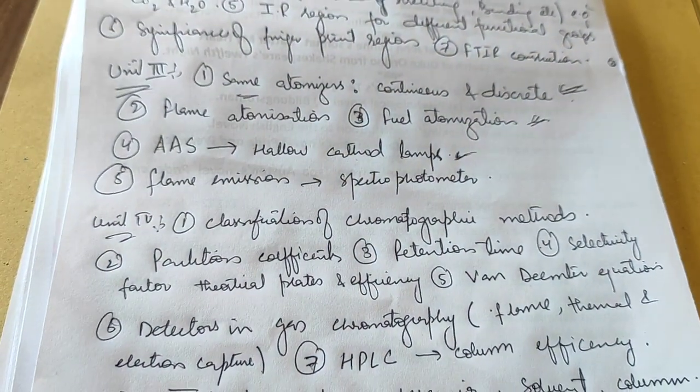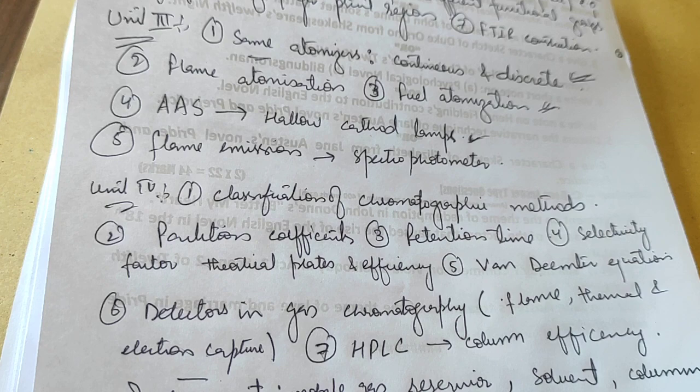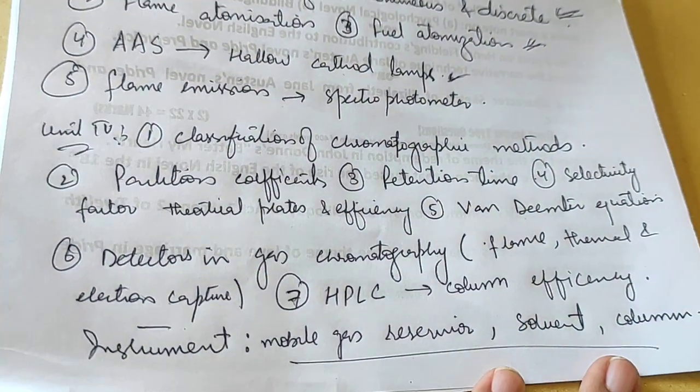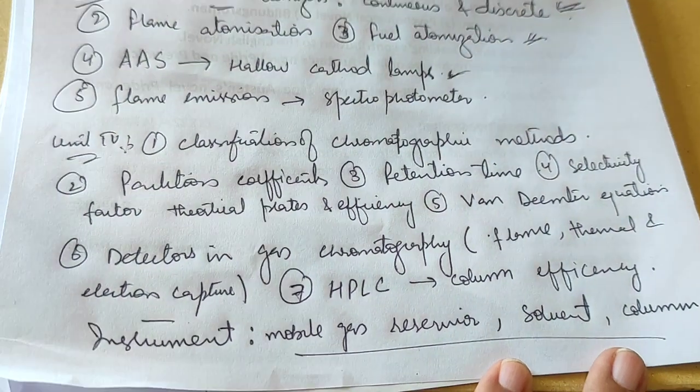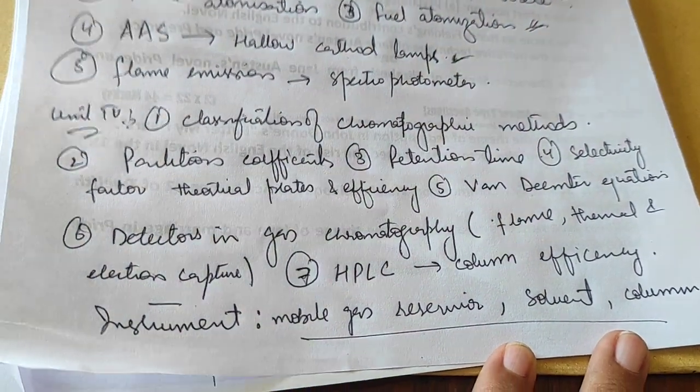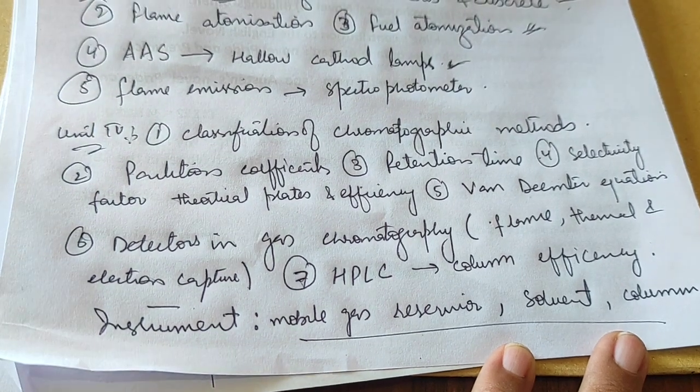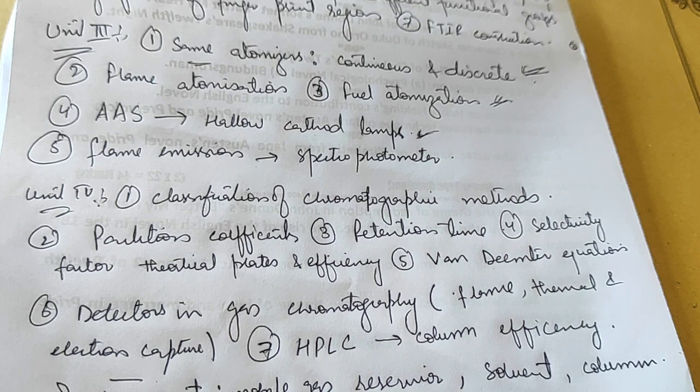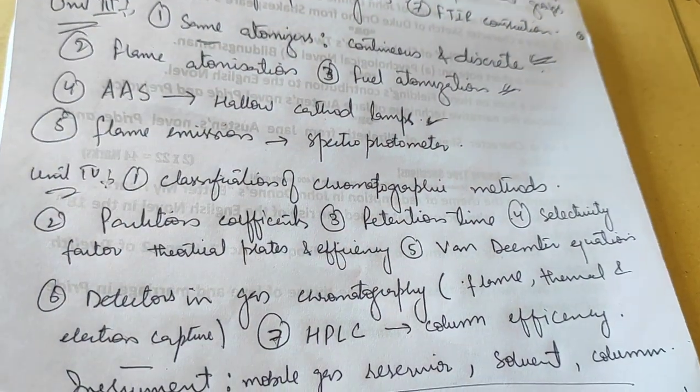In the last chapter, go for chromatography. Understand the basic principles of chromatography like gas and paper chromatography. Then cover partition coefficients. These are the basic terms involved in chromatography: partition coefficients, retention time, theoretical plates and efficiencies, and Van Deemter equation.